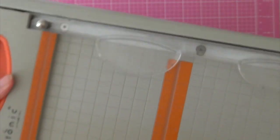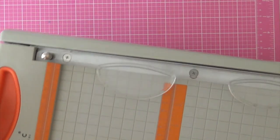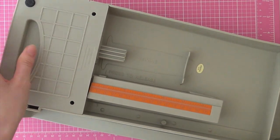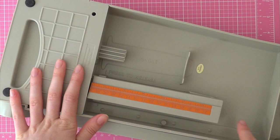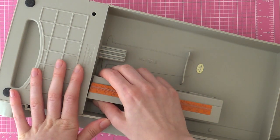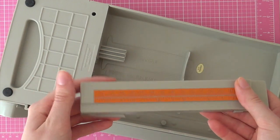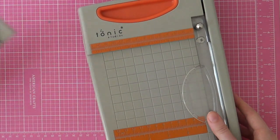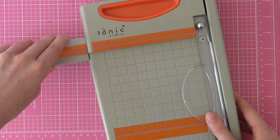So as you can see it doesn't fall out so you can easily put it in a closet, a drawer, or even on your desk if you would like to. And then if you want to use it again, then you just press these little knots and then pull it out and there you go. And then you can just turn your machine around and put it back in.